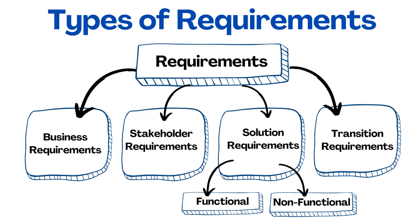The fourth requirement type is transition requirements, which refer to requirements needed to enable successful implementation of a project. These are short-period requirements — once completed, they no longer exist. As per BABOK, transition requirements describe capabilities the solution must have to facilitate transition from the current state to the future state, but which are not needed once the change is complete. Examples include: users must be trained to use the system effectively, or previous year's data must be migrated to the new system.